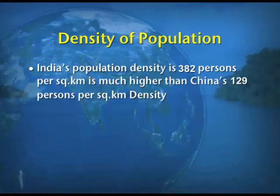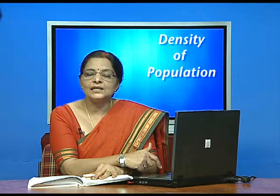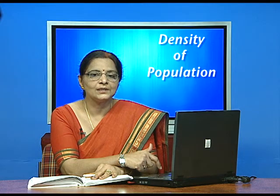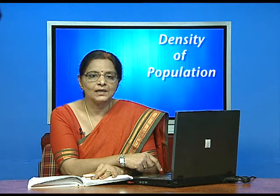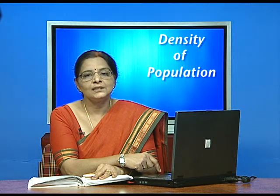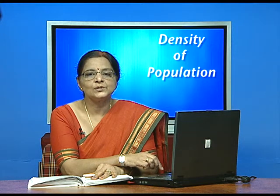As the table shows, the density of population of India according to the 2011 census is 382 persons per square kilometer. An amazing fact to correlate with this is that it is higher than China's density of 129 persons per square kilometer. Although we say China is the leading country with the highest population, India's density of 382 is far higher than China's 129.